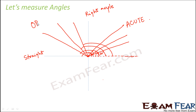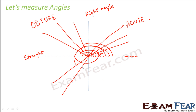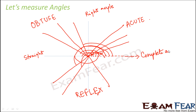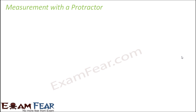All the angles beyond 180 degrees but less than 360 degrees fall under the category of reflex angles. And finally, when you complete one full rotation, you reach the complete angle, which corresponds to 360 degrees. So these are the various types of angles that we have learned.